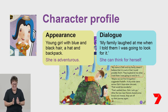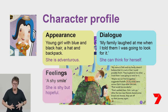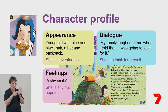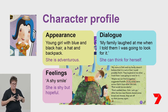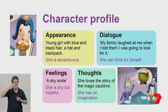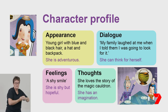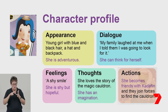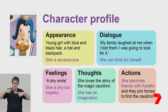So how is Oshii feeling? At this point of the story, the noun group 'a shy smile' tells readers how she is feeling — she feels hopeful about the future. Is there something that tells us Oshii's thoughts? The way she loves listening to the legend of the cauldron shows that she has an excellent imagination. We can also note Oshii's actions — she is sobbing when she meets Kadhafin, but when they become friends and decide to go on the journey together, she is much happier.